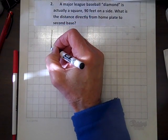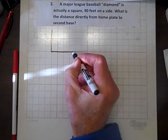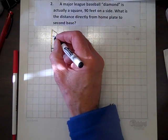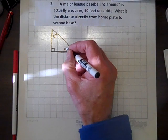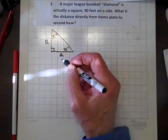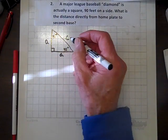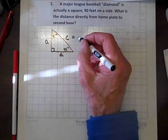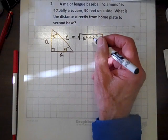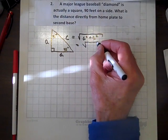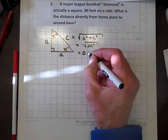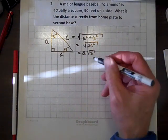For any 45-45-90 right triangle, with angles of 45 degrees and 45 degrees, the length of each leg is a, and c is the hypotenuse. According to the Pythagorean theorem, c equals the square root of a squared plus a squared, which equals the square root of 2a squared, which equals a times root 2. That's always the case.